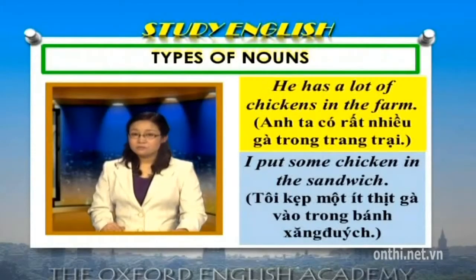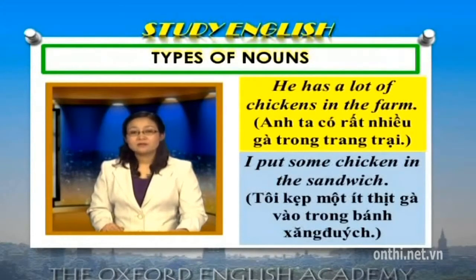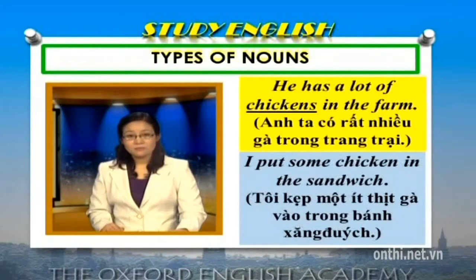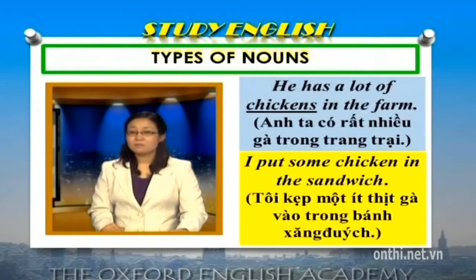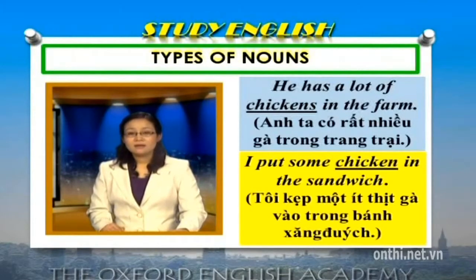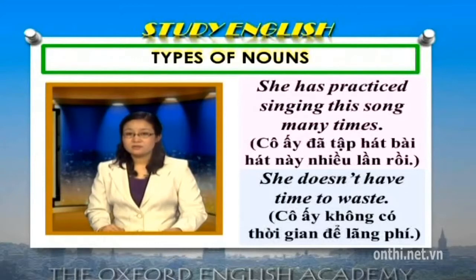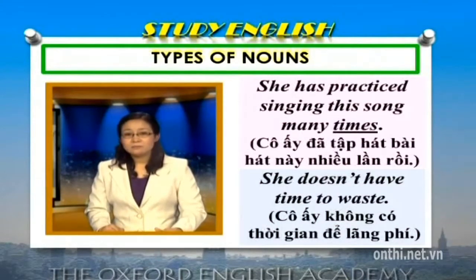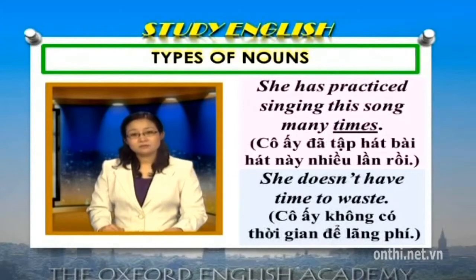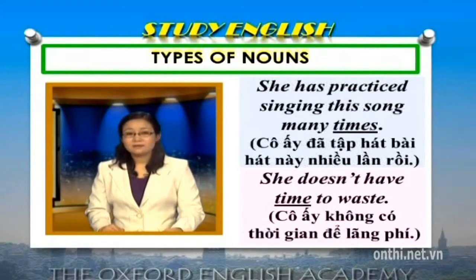Thứ hai, cùng một danh từ nhưng với nghĩa hoặc khái niệm khác nhau, có thể thuộc loại danh từ đếm được hoặc không đếm được. Ví dụ: "He has a lot of chickens in the farm" - từ chicken có nghĩa là con gà và là danh từ đếm được. Nhưng "I put some chicken in the sandwich" - chicken là một chất liệu và trở thành danh từ không đếm được. Tương tự, "She has practiced singing this song many times" - từ time có nghĩa là lần hoặc lượt và là danh từ đếm được. "She doesn't have time to waste" - time nghĩa là thời gian và là danh từ không đếm được.